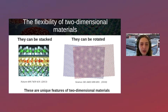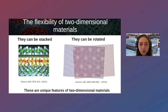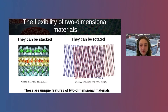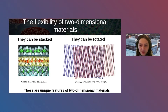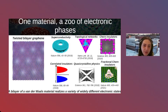This idea relies on a simple chemical fact: the weak van der Waals forces allow us to take any two materials, put them on top of one another, and combine any electronic orders we want. We can combine conventional superconductors with ferromagnets, topological insulators, or antiferromagnets. We can also twist the materials with respect to each other, controlling the coupling between them and engineering new electronic states associated with a moiré superlattice.